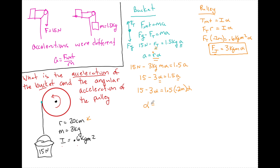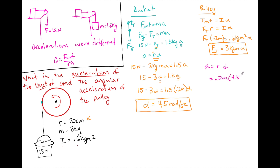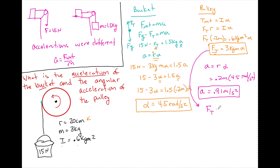Solving for alpha, the angular acceleration of the pulley is 4.5 radians per second squared. Then A equals R times alpha equals 0.2 meters times 4.5 radians per second squared, giving the bucket's acceleration as 0.91 meters per second squared. If we also wanted the tension of the string, FT equals three kilogram meters times 4.5 radians per second squared. This is how we use torque equals moment of inertia times alpha, combined with the linear relationship for an object moving linearly.